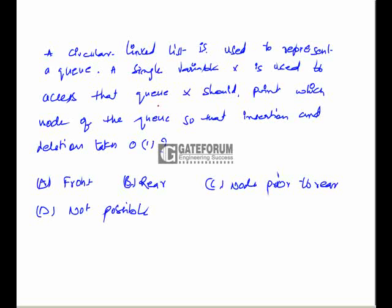Here the question is: a circular linked list is used to represent a queue. A single variable X is used to access that queue. X should point to which of the following nodes of the queue so that insertion and deletion takes order of 1. So here four options are given: option A front, option B rear, option C node prior to rear, and option D is not possible.